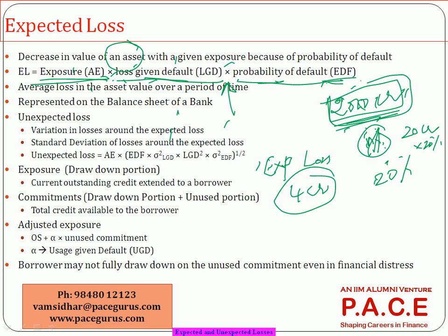Apart from the 4 crores as expected loss, this figure is computed under the assumption that 1 percent will be the probability of default and only 20 percent of that cannot be recovered. But in case actual losses exceed this assumption, that's where the unexpected loss consideration comes in.